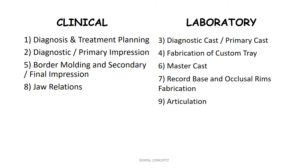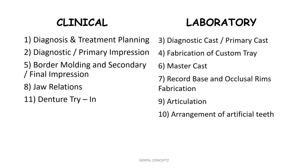The occlusal rims are then mounted on the articulator and artificial teeth are arranged. After arrangement of artificial teeth, we do the denture trial. Once the trial denture is approved by the patient and the operator, the dentures are processed. After processing, we do the laboratory remounting, which is done to remove occlusal discrepancies by a selective grinding procedure.